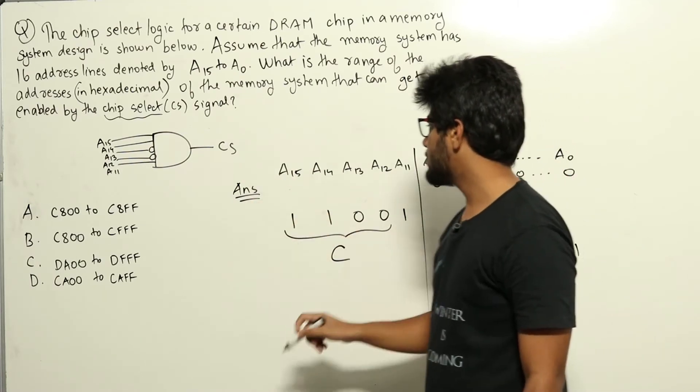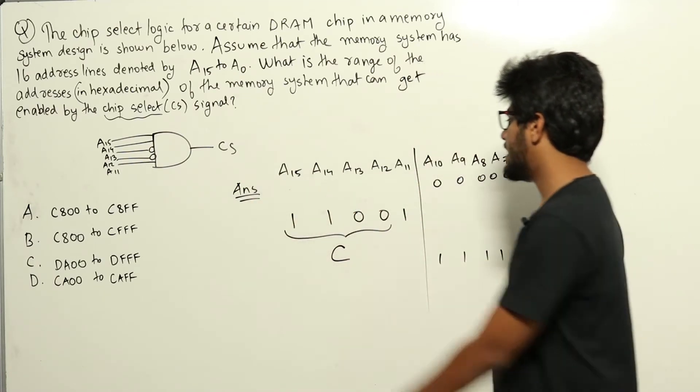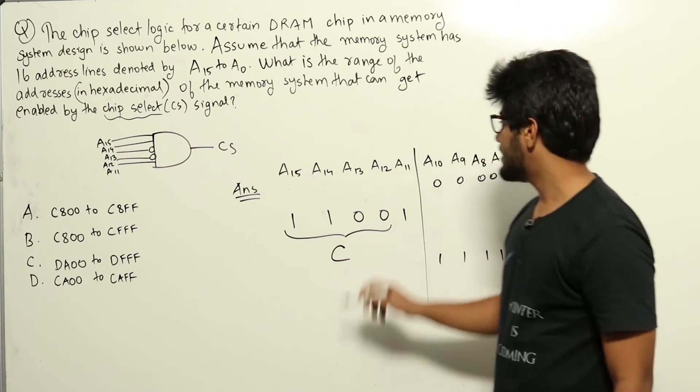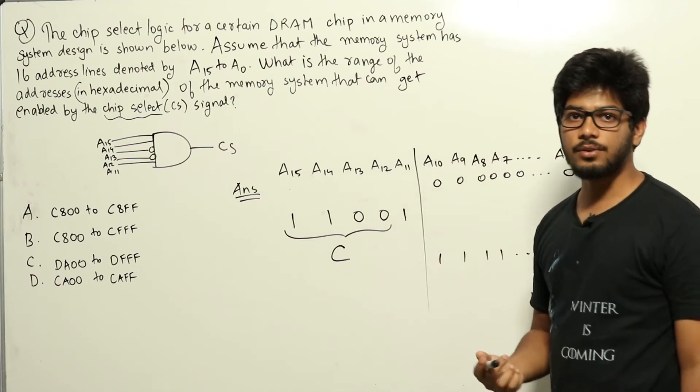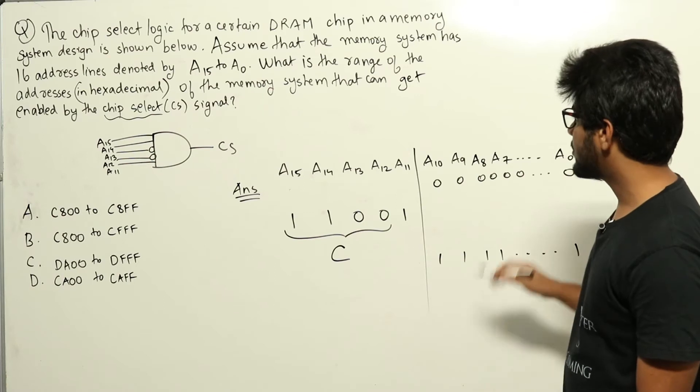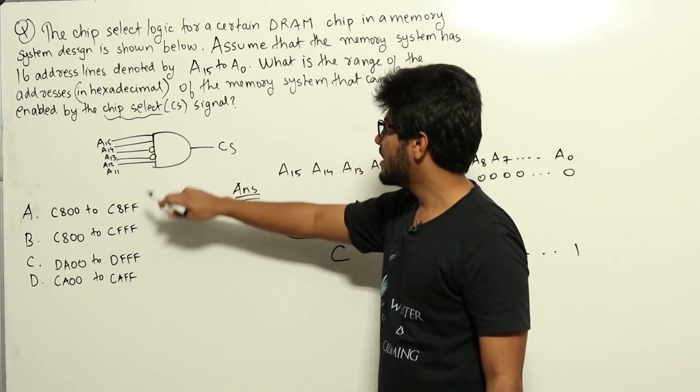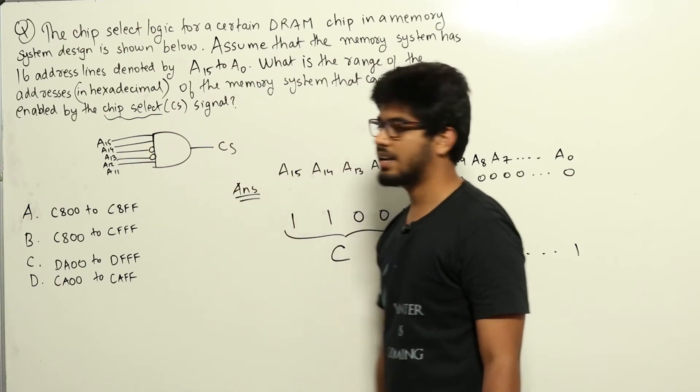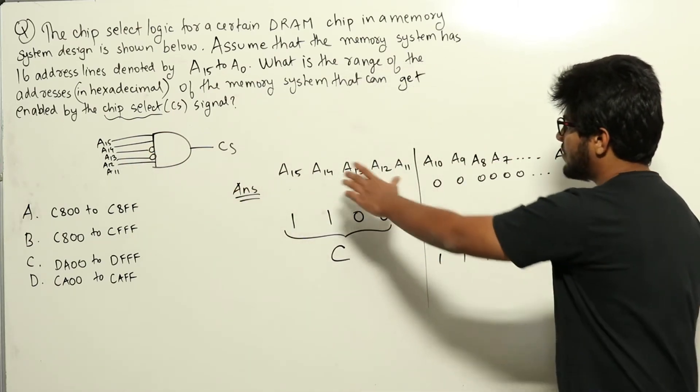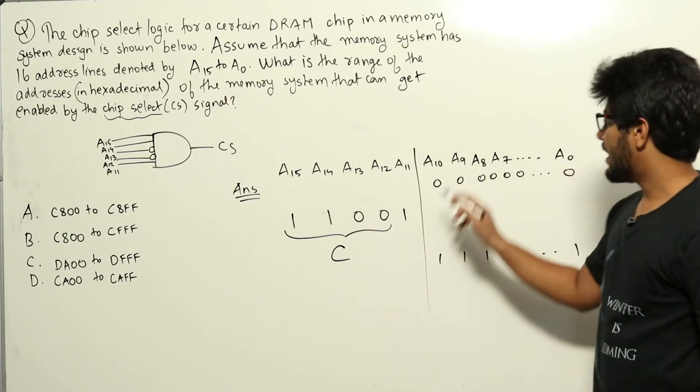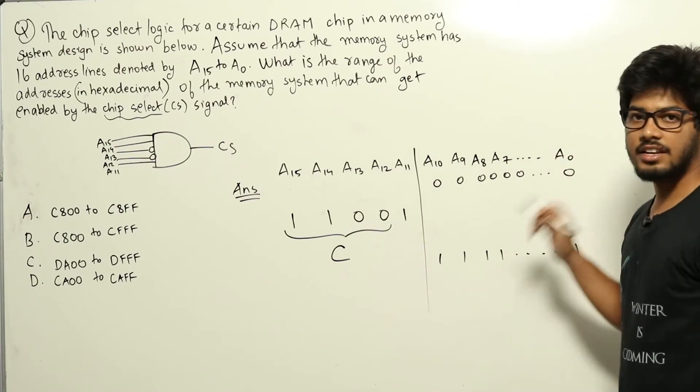Now for the signal CS to be 1, A15 to A11 should take these values only, and A10 to A0 can take any value. Whatever value A10 to A0 take doesn't matter because we are not giving it as input to the AND gate. Input to the AND gate is only A15 to A11. So A15 to A11 we have to keep constant at this value; A10 to A0 can take any value.